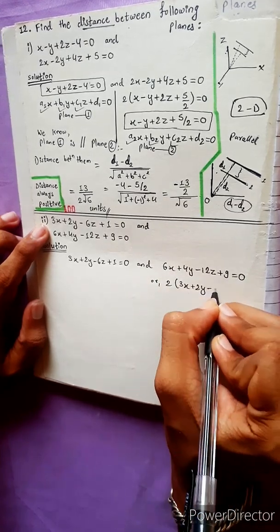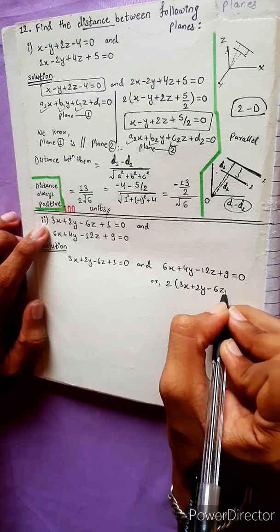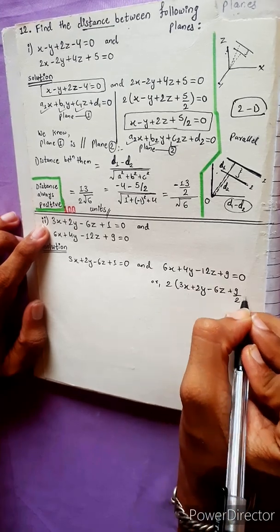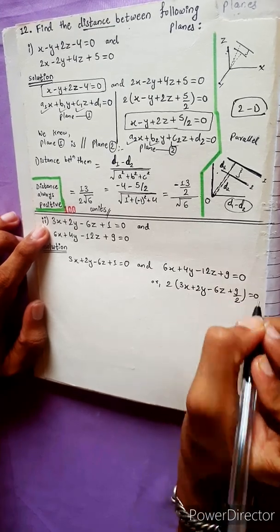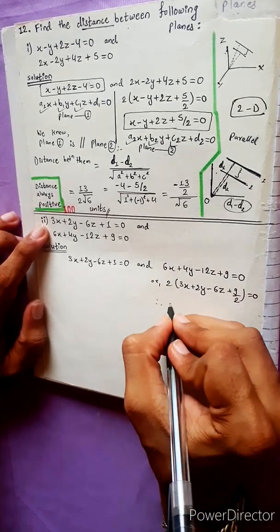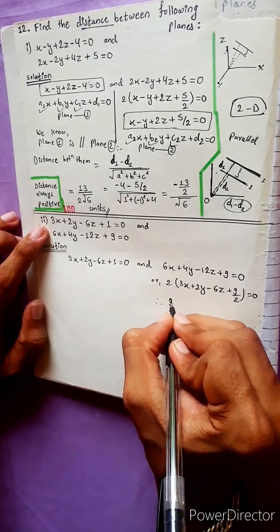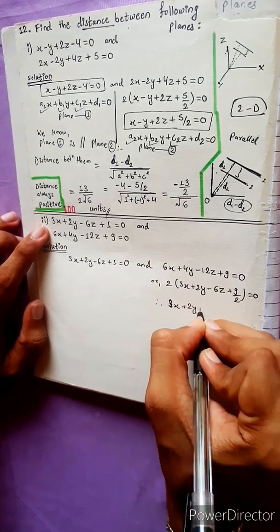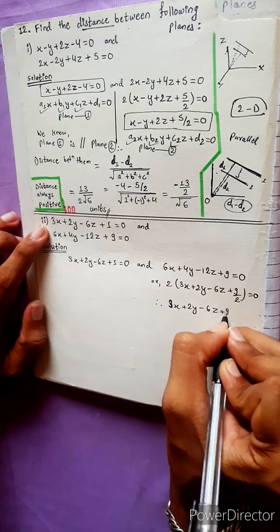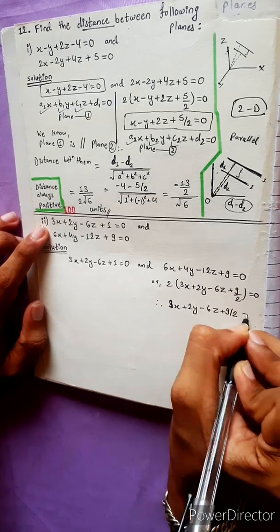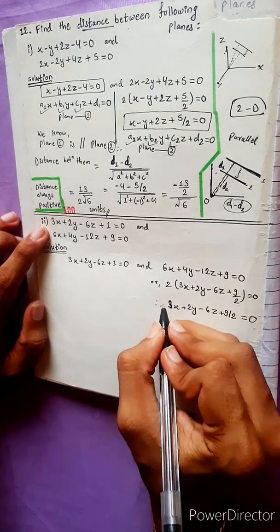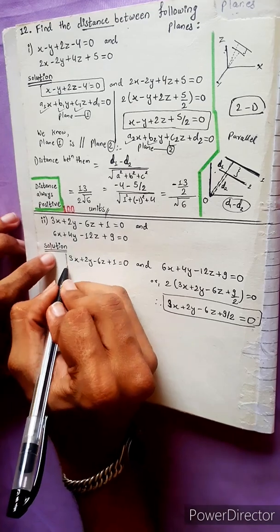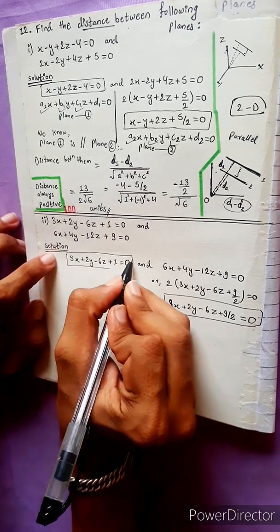...plus 9/2 = 0. Therefore, Plane 2 simplified is: 3x + 2y - 6z + 9/2 = 0. Now we compare the two equations.